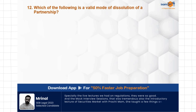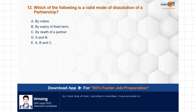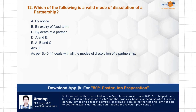Question: Which of the following is a valid mode of dissolution of a partnership? Options: notice, expiry of fixed term, death of a partner, any partner, A and B, or A, B and C. The correct answer is E — all of these are valid modes of dissolution, covered under Sections 40 to 44 of the Partnership Act. You should know all the modes of dissolution.